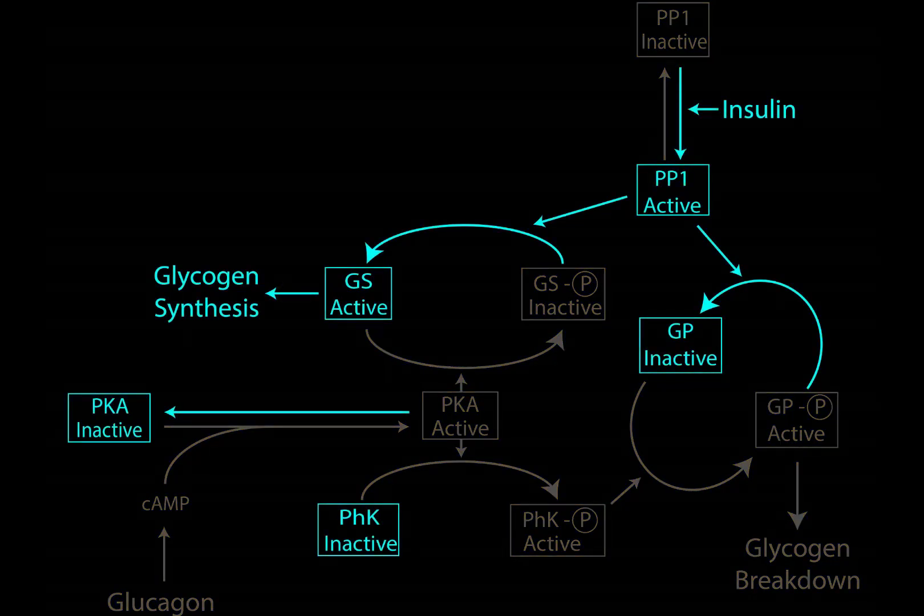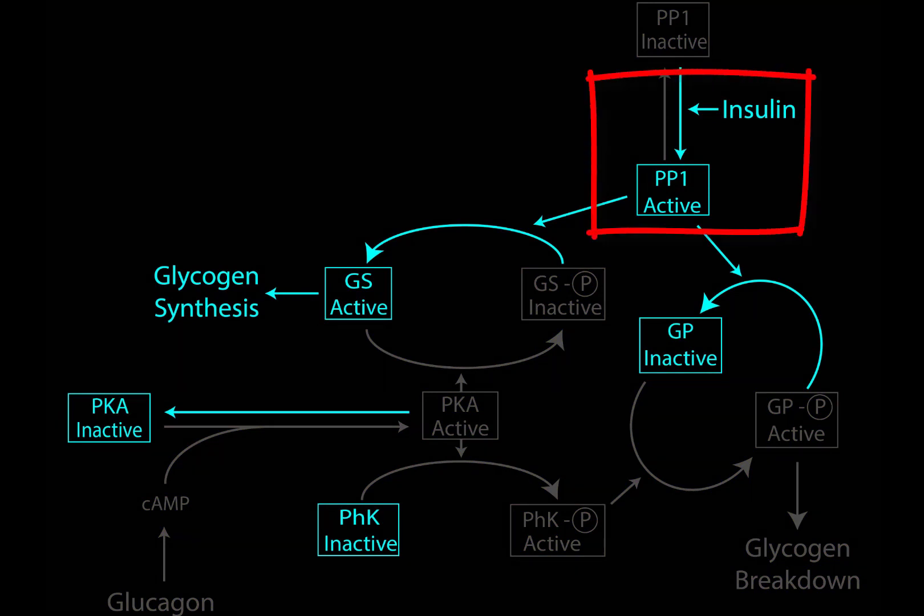By doing this, we can see that insulin initially activates our phosphoprotein phosphatase. And this has the effect of inactivating glycogen phosphorylase. Remember glycogen phosphorylase is the enzyme that will break down glycogen. So insulin will turn off glycogen breakdown.